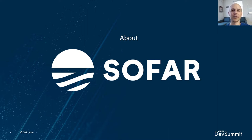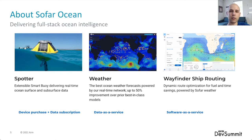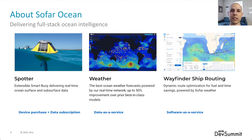Let me tell you about the company I work for, Sofar, which is basically in the ocean data as a service industry. We make our own sensors — buoys called Spotters — that get deployed all over the ocean, drifting or moored. Customers can purchase them or we have our own. We collect wave heights, winds, temperatures, and other atmospheric measurements, receive all this data over satellite, run it through algorithms, and produce better weather forecasts. We also have a ship routing service and provide data to scientists.